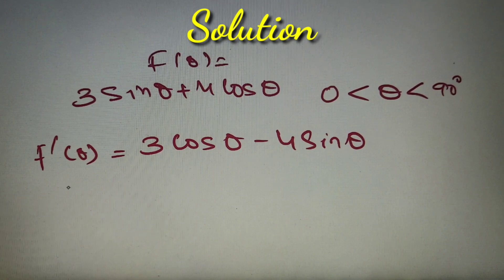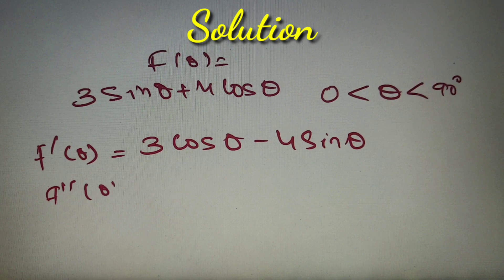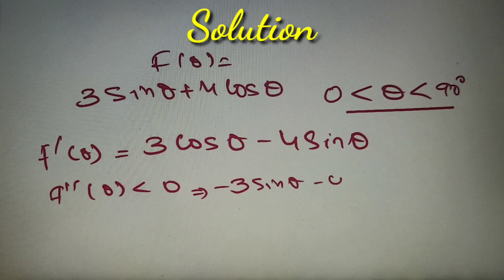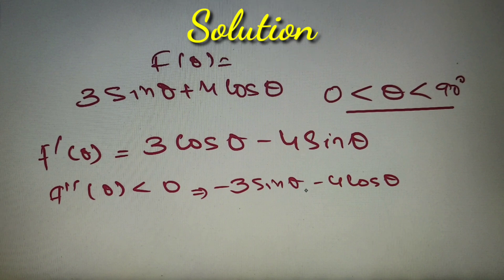Now we have to check whether f double dash theta is less than 0 to get the maxima. If we differentiate once again we will get minus 3 sin theta minus 4 cos theta. Since it is given that theta is between 0 and 90 degrees, sin theta and cos theta both will be positive.